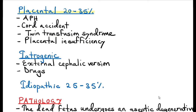Placental causes account for about 20 to 35 percent of all the causes and include antepartum hemorrhage — which can be placenta previa or abruption placenta — causing acute placental insufficiency. Cord accidents like cord prolapse, a true knot, or cord around the neck. Twin-to-twin transfusion syndrome or placental insufficiency due to other causes.